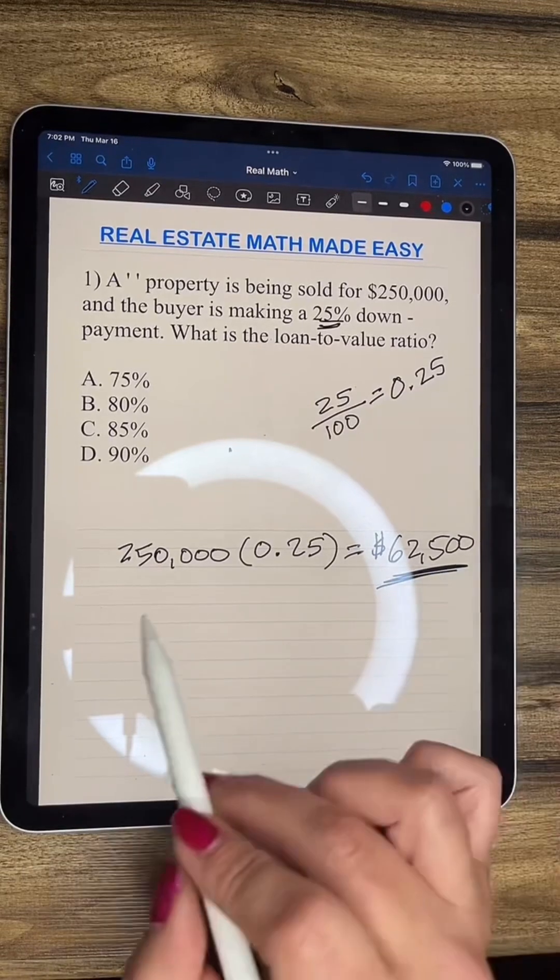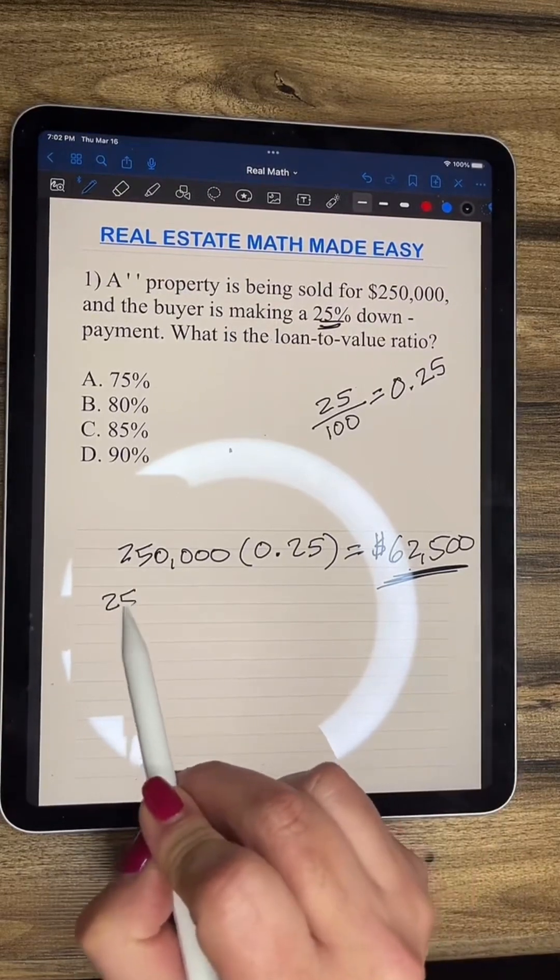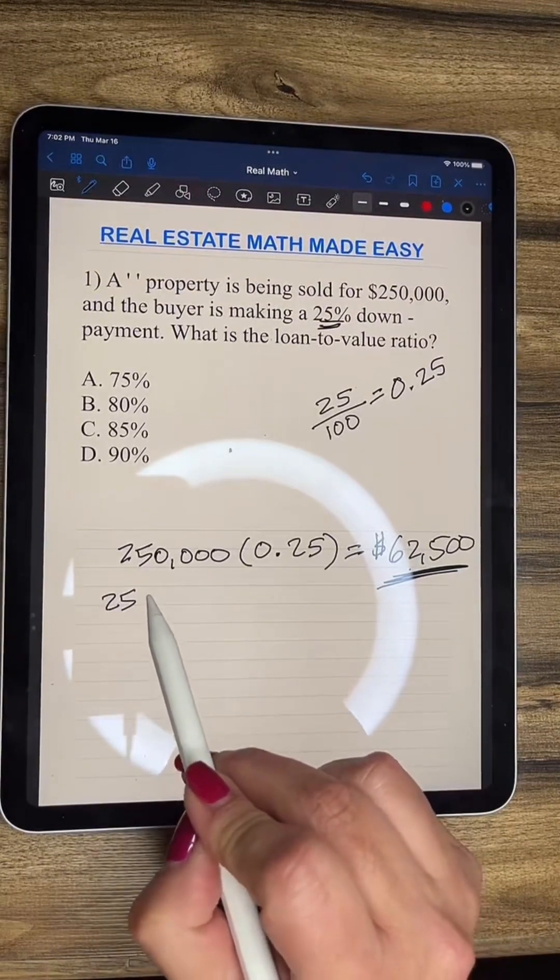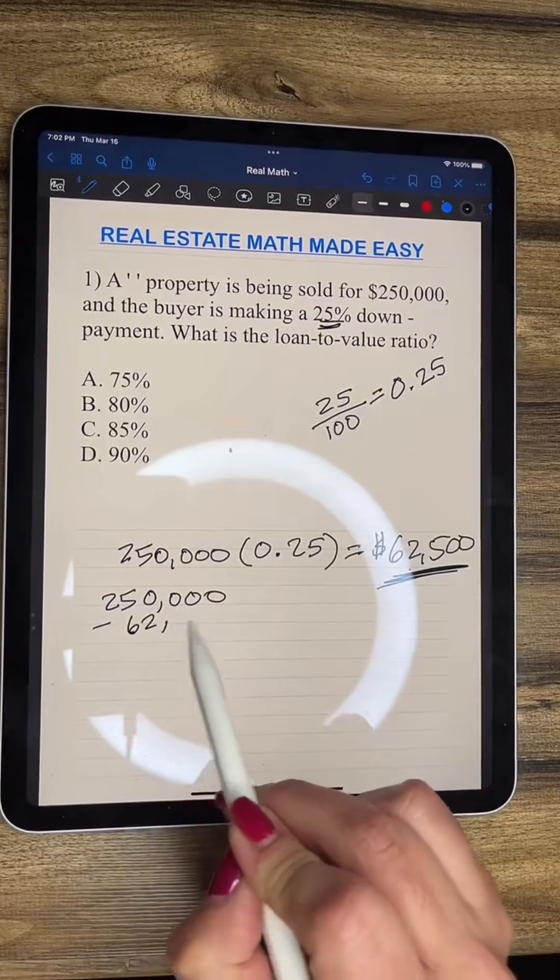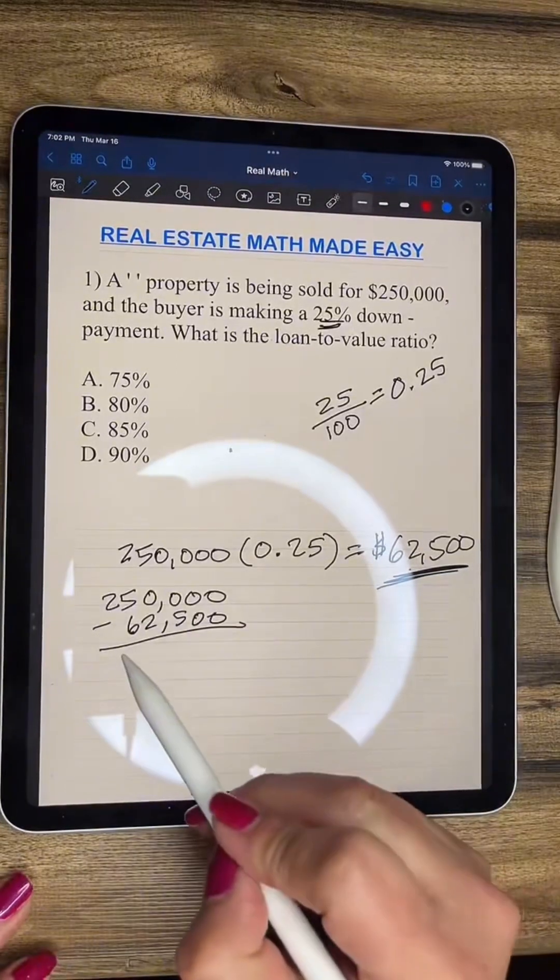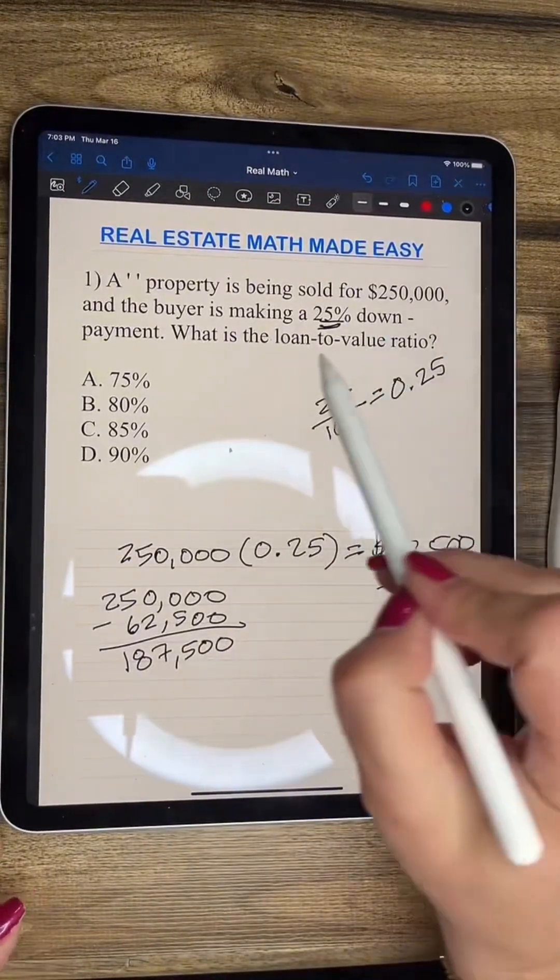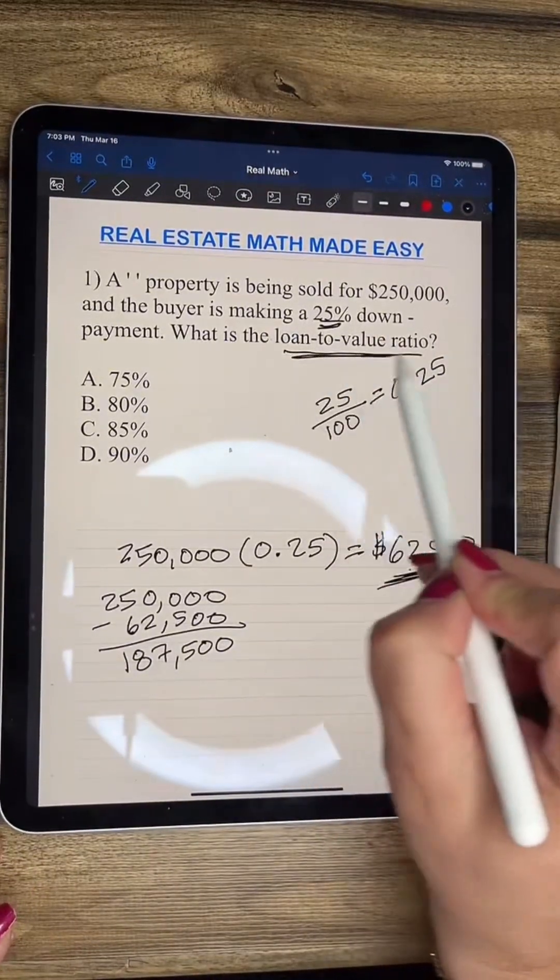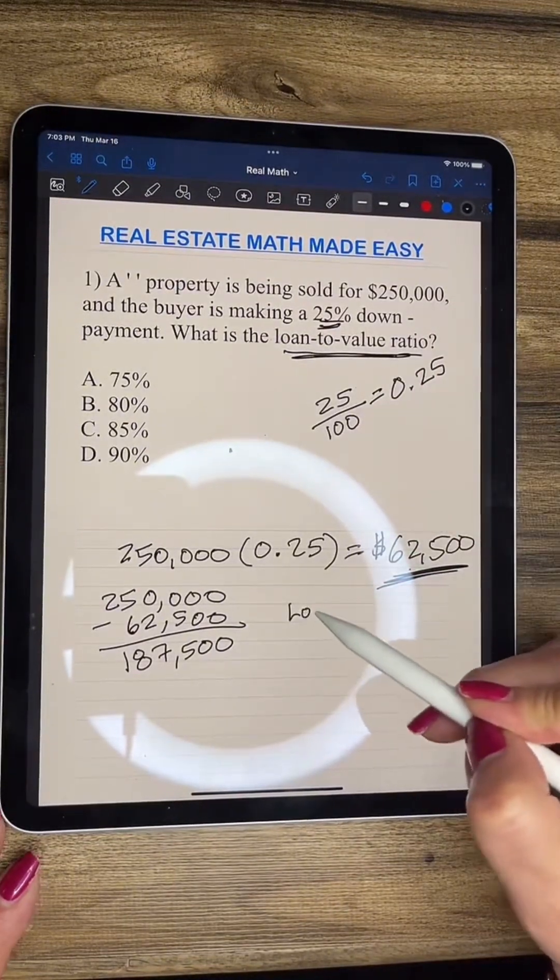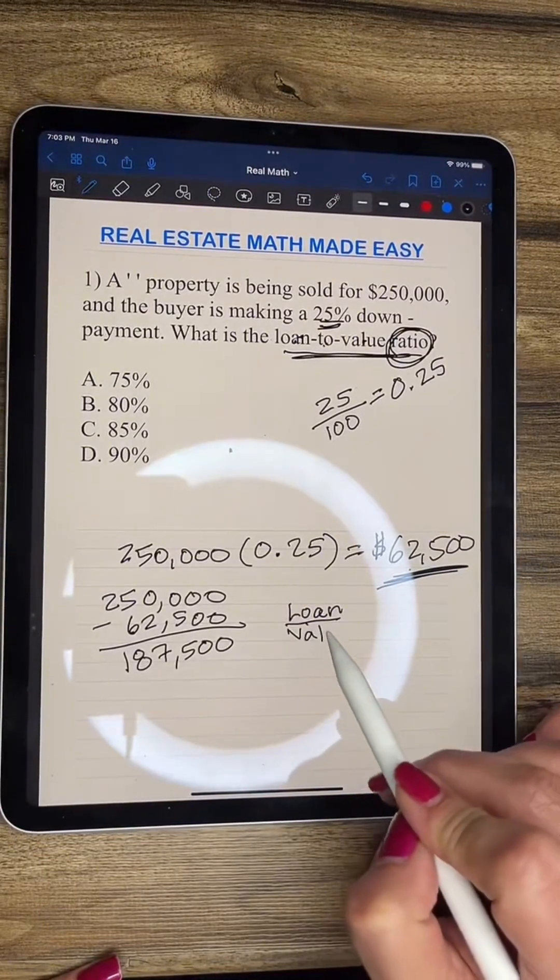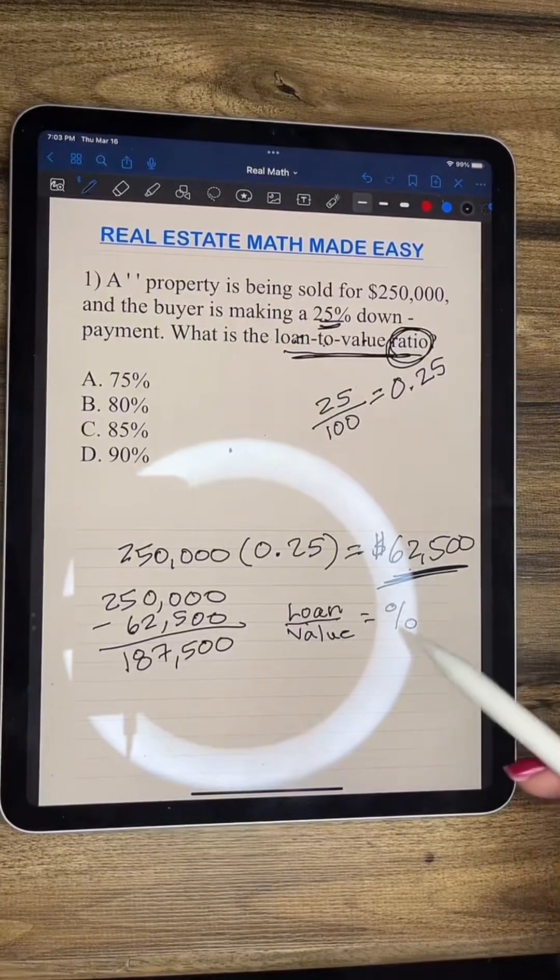So we now have to subtract this value from this value because it's a 25% down payment, right? So $250,000 minus $62,500, we get $187,500. Now, what they're asking here is loan to value. That's very important. So remember, loan to value equals your percent in decimal.